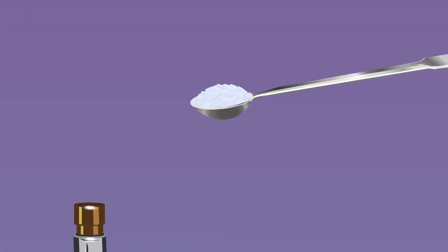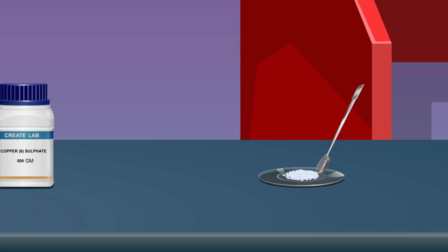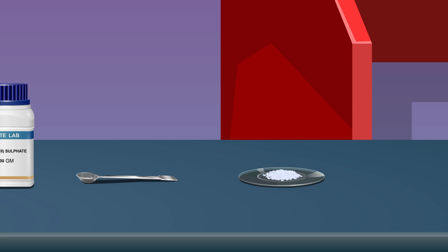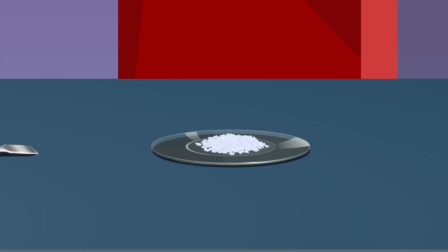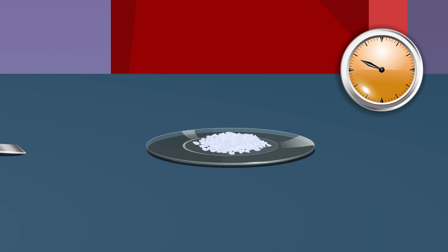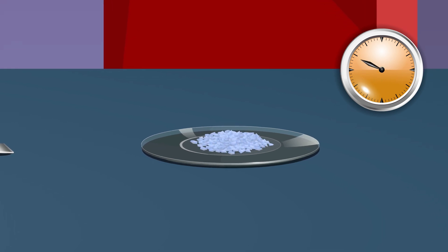Stop heating when it becomes completely white. Transfer the content to a watch glass, keep the watch glass in an open atmosphere for some time, and allow it to cool. We observe that the white color of the anhydrous copper sulfate changes to blue.